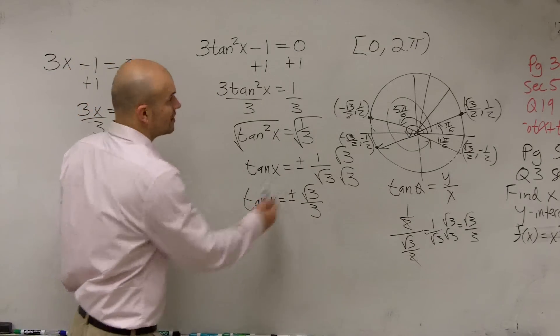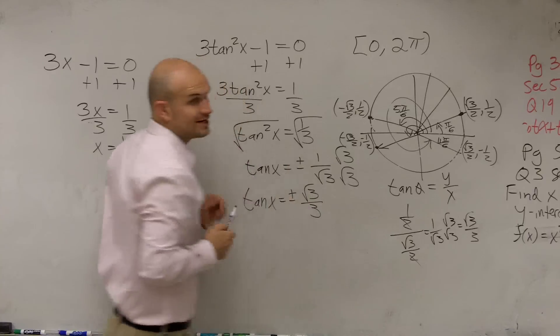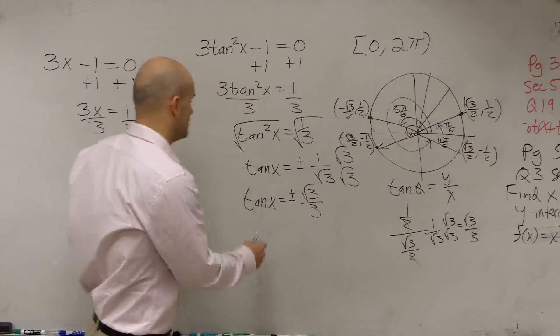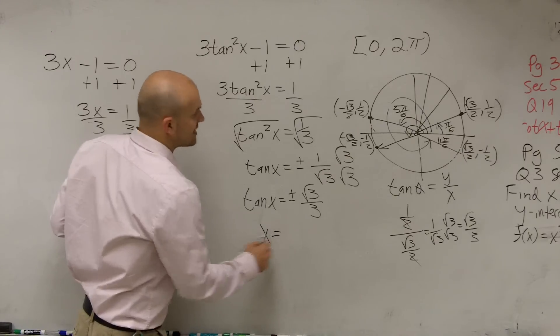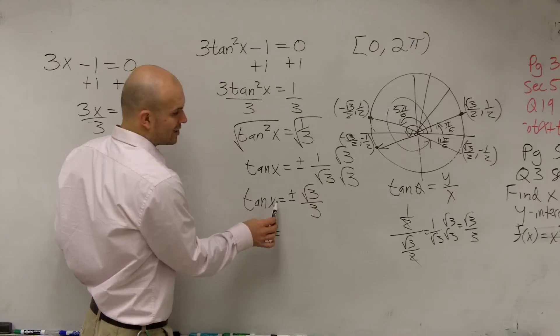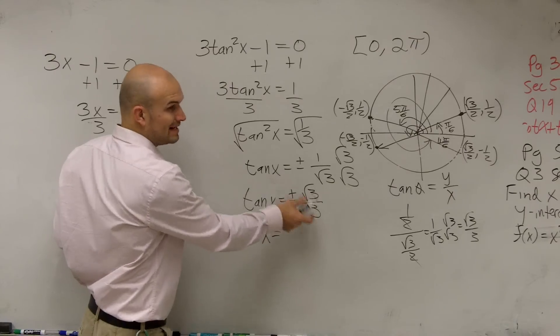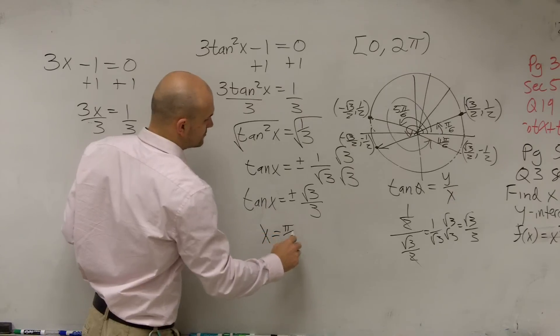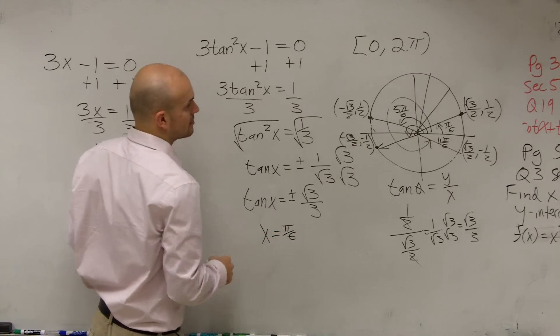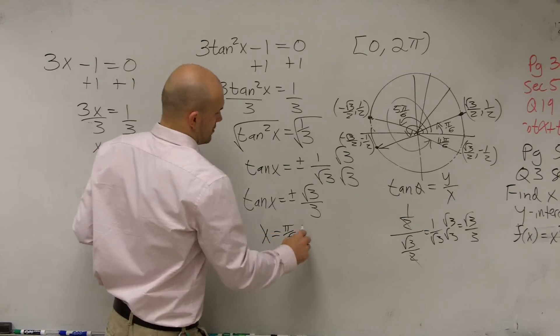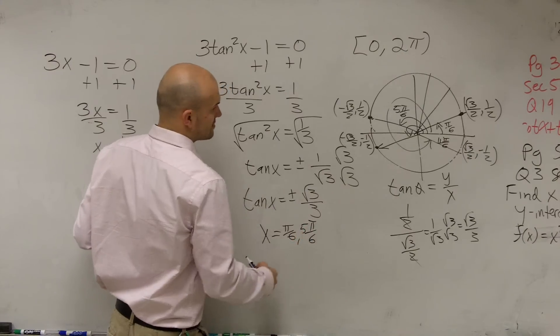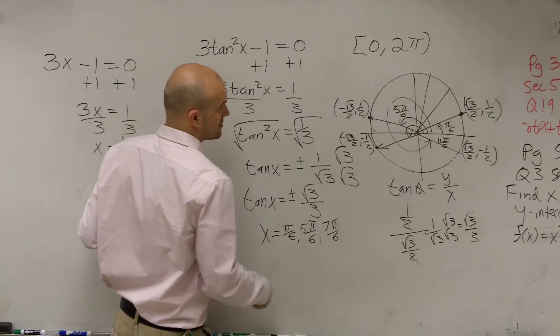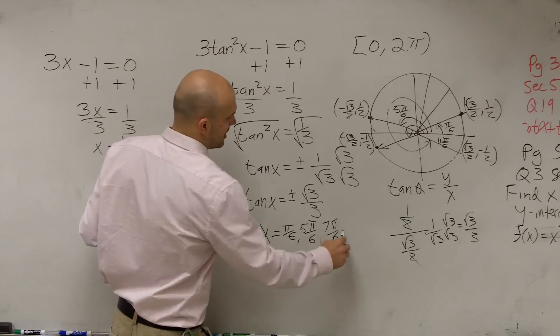So therefore, my answer on the interval of 0 and 2π, meaning only on the interval of the unit circle, of one revolution of the unit circle, I'm going to have four values. So I can say x equals, so the value, my angle, when I take the tangent of my angle, when it equals square root of 3 over 3 on the interval of 0 and 2π, equals π over 6, 5π over 6, 7π over 6, and 11π over 6.